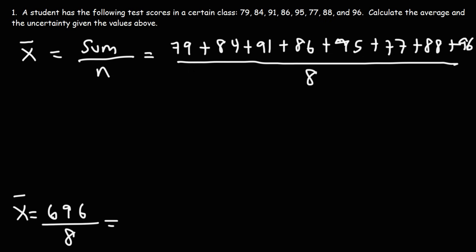Now if we take 696 and divide it by eight, it's going to give us 87. So that is the average test score.